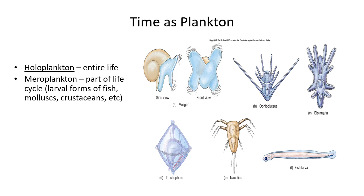We can also look at how often organisms are plankton. Some organisms are only plankton for a small part of their life, such as fish larvae — we would call them meroplankton. But if you're plankton your whole life, which a lot of the smaller plankton types are, then you would be called holoplankton. Most of these things are holoplankton, with fish larvae being the one exception as meroplankton.